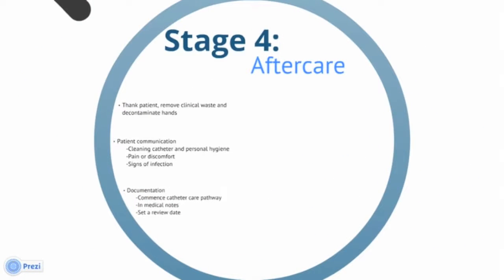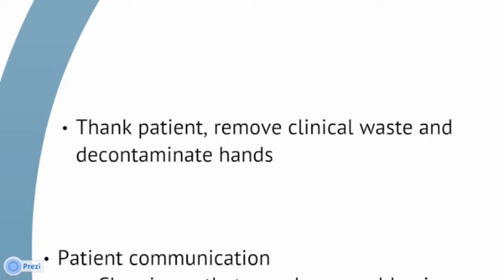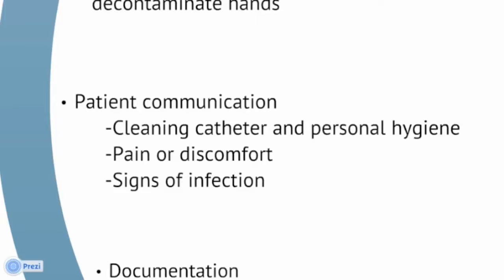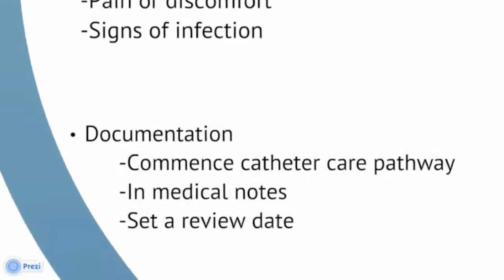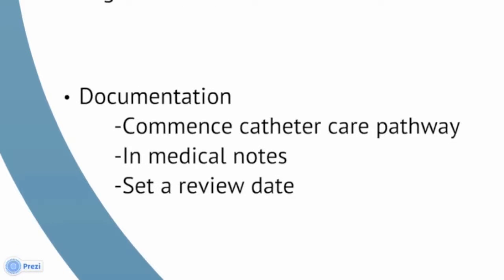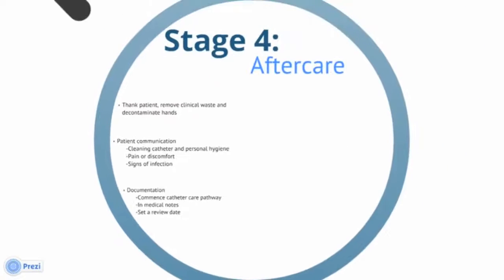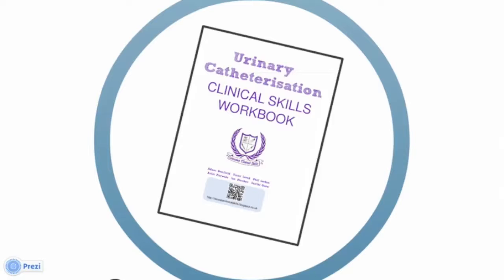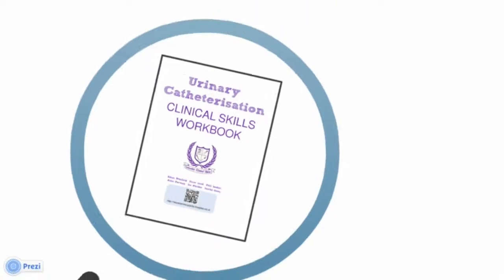Stage 4 covers the aftercare of your patient. Thank the patient, remove any remaining clinical waste and decontaminate your hands. You should give thorough aftercare advice to your patient, such as cleaning the catheter and maintaining personal hygiene. Notify them of potential problems that they may need to observe for, such as pain, discomfort, or signs of infection such as discharge, and who to inform. Commence a catheter care pathway and document what you have done in the medical notes using the green sticker. You should also place the catheter package stickers in the medical notes and complete information requested on the package. Inform the patient's nursing and medical team and set a review date. This completes the female catheterisation video. Accompanying this, there is a workbook with additional information. We hope you now feel more confident in performing catheterisation and wish you the best of luck. Thank you.